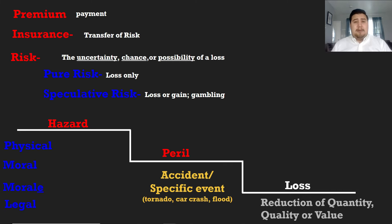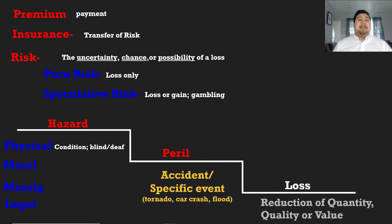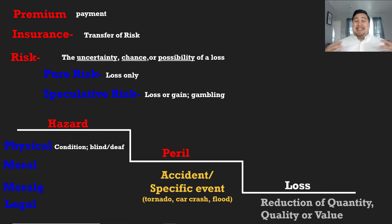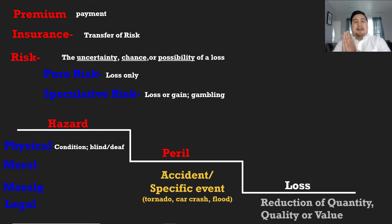The first is physical hazard — a physical condition you may have, such as being blind or deaf. Having any type of physical condition can unfortunately lead you to have an accident, and you're more prone to accidents because of it. For example, obesity is considered a physical condition and can lead to major health issues or accidents down the road. So physical hazard is simply a physical condition you may have.